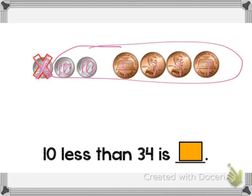Okay, so let's see. 10, 20, 21, 22, 23, 24. So 10 less than 34 equals 24.